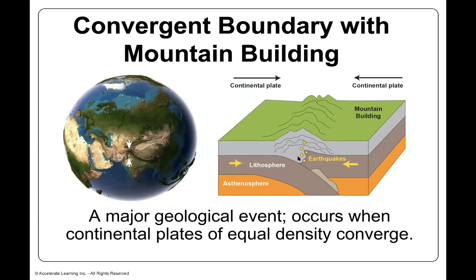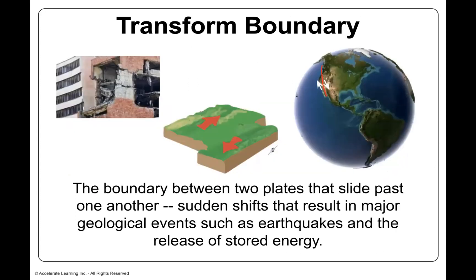Convergent boundaries also cause mountain building, which you'll learn more about later in this virtual field trip. We have the continental plate moving in one direction and another continental plate moving in the other direction, creating a convergent boundary — a major geological event that occurs when continental plates of equal density converge. A transform boundary is where two plates slide past one another, and sudden shifts result in major geological events such as earthquakes.